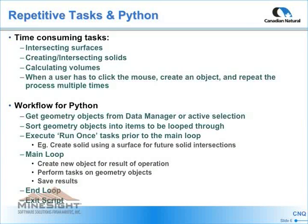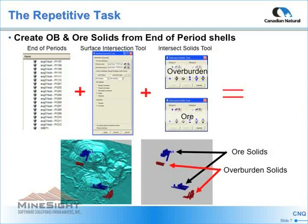Here's an example I'll use over the next few slides: creating overburden and OR solids based on end-of-period pit shells. The workflow is: first get the objects, sort them into categories, execute run-once tasks, then loop through the sorted objects. The manual method requires creating a total OR solid, saving the result to a new geometry object, creating a cut solid between two end-of-period surfaces, intersecting the two solids to get both an OR solid and an overburden solid — repeated for every end-of-period shell you have.